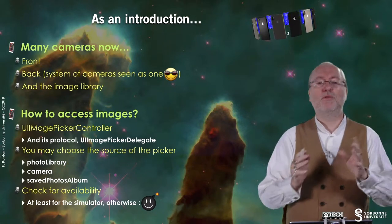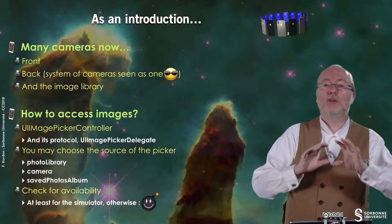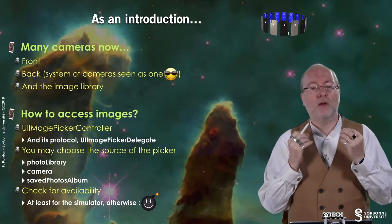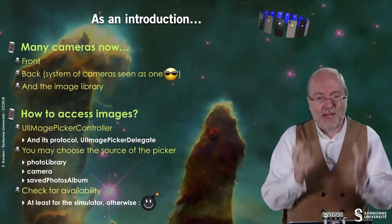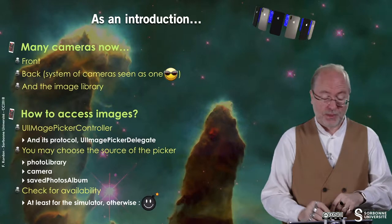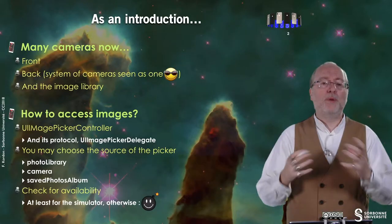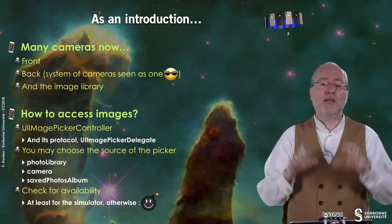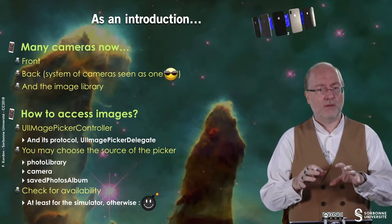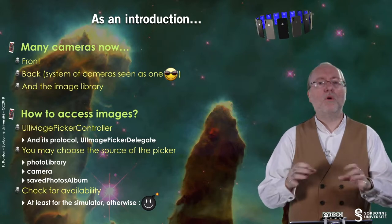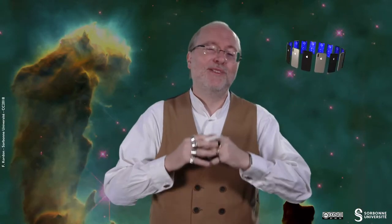There is a subtle difference between the photo library and the saved photo album that I'm not totally aware of. Of course you have to check for availability — at least this is true for the simulator because it has no camera, and if you don't check in the simulator and you access the camera, it will crash. But today all devices running iOS 12 have all cameras set up, so there is no real problem accessing these cameras.